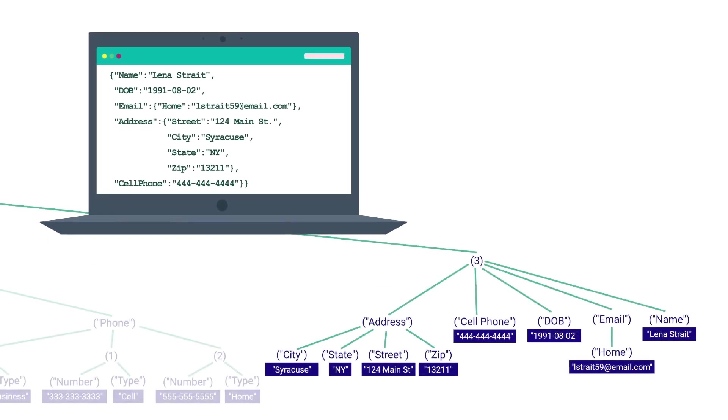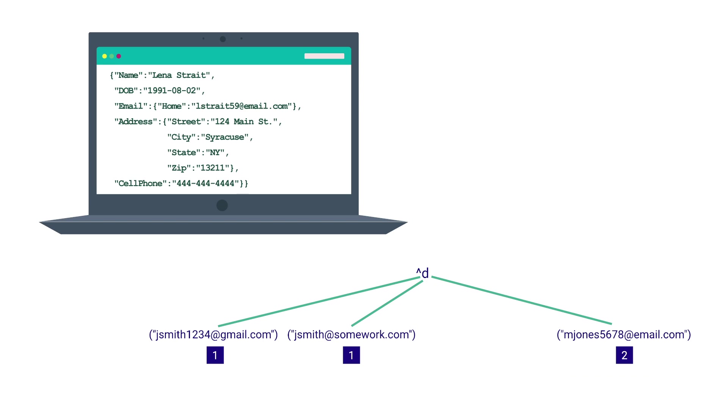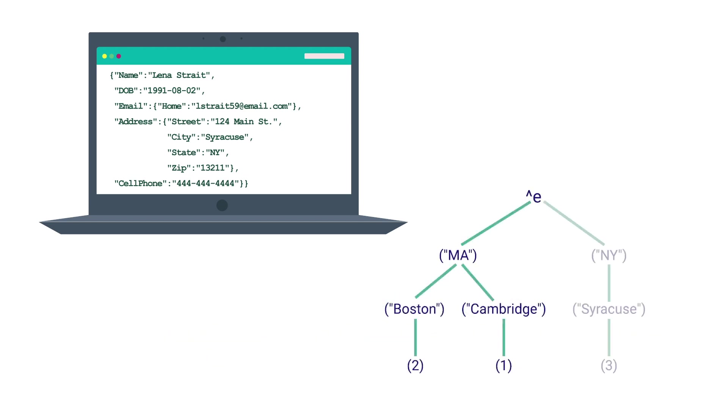So her data is added to the C global to the right of Mary's data because her ID is number three. And her email address and ID are added to the D global in between John and Mary's emails. But her state and city are added to the E global to the right of John and Mary's state and city.